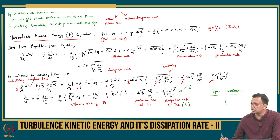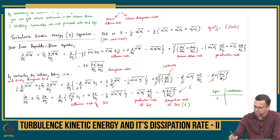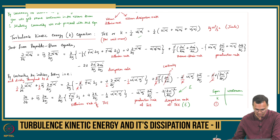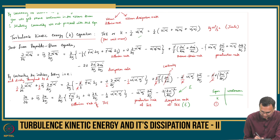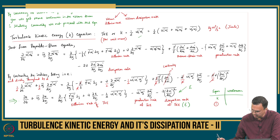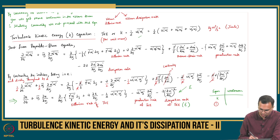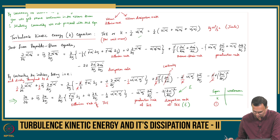I have one equation for k — one equation for turbulence kinetic energy. I am only going to solve this particular equation. This is my turbulence kinetic energy equation k. uj bar I am going to get from solving the mean momentum — let us say I have access to it. On the right-hand side, I have unknowns.